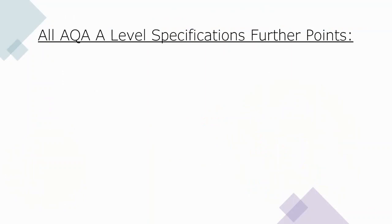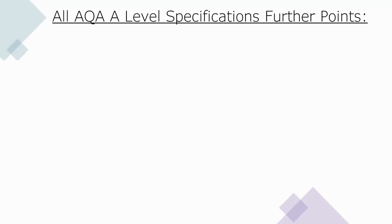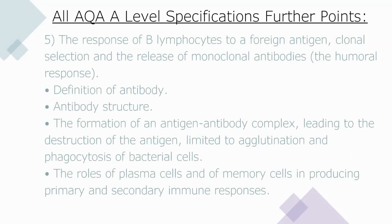The next specification points cover the response of T lymphocytes to a foreign antigen — the cellular or cell-mediated response — including the role of antigen-presenting cells, helper T cells stimulating cytotoxic T cells, B cells, and phagocytes. You also need to know the response of B lymphocytes to a foreign antigen, including clonal selection and release of monoclonal antibodies (the humoral response), the antibody structure, antigen-antibody complex formation, agglutination, and the roles of plasma cells and memory cells in primary and secondary immune responses.